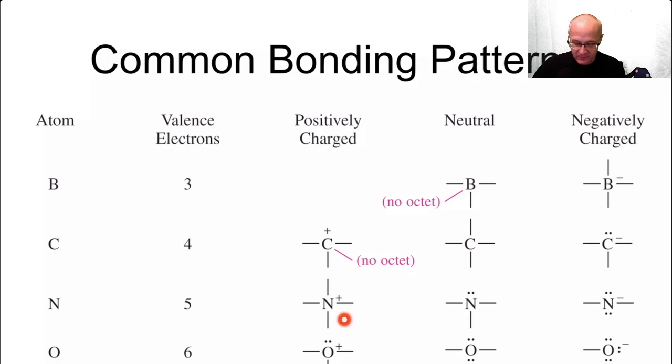Nitrogen with four bonds right here: plus charge. Nitrogen with a lone pair, one lone pair, three bonds: neutral. Nitrogen with two lone pairs, two bonds: negative. Memorize this if you want to. I wouldn't. I would just use my tool. The tool that I gave you, just use it.